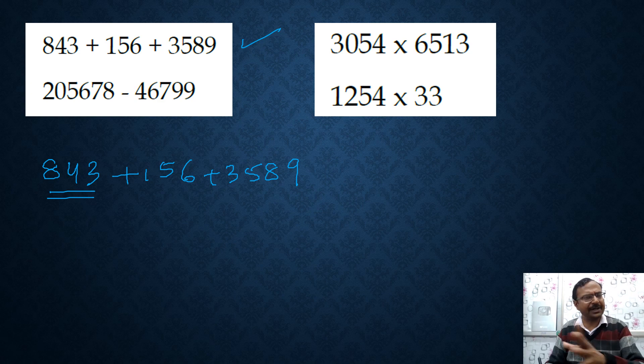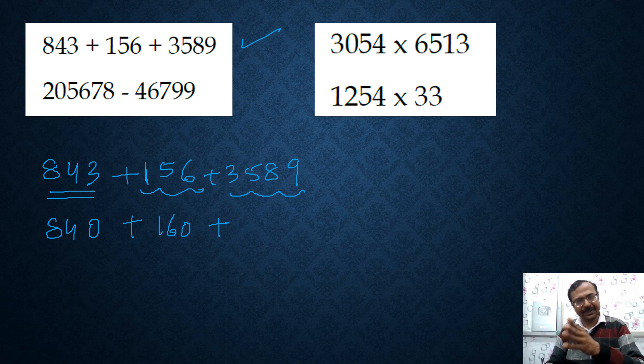So you can see 843. I will round it off to nearest 10 so that we can have a better estimate of the sum. So 843 is close to 840 and it is little bit away from 850. So 843 becomes 840. And likewise, 156 is closer to 160 as compared to 150. So I will write 160 here and then 3589. Obviously, it is very close to 3590.